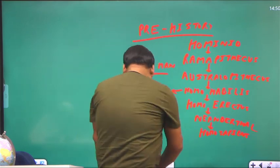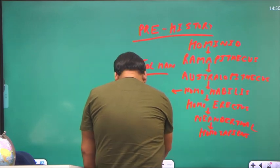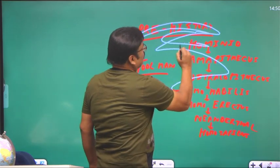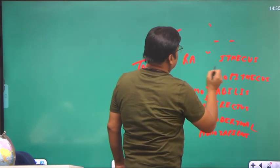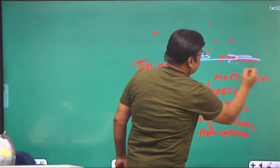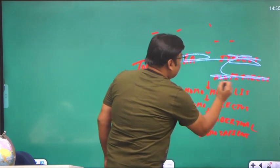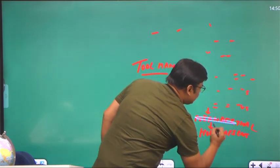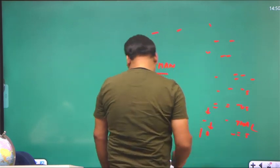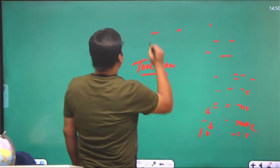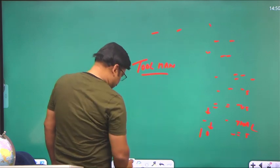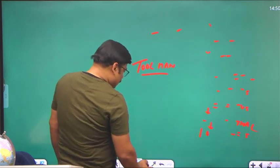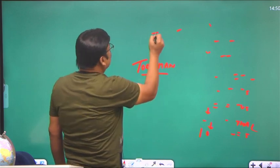After Homo erectus, there was the development of Neanderthal, and after Neanderthal, obviously we - the modern man, Homo sapiens - came. So we can see that there has been a chain of evolution that occurred before the formation of modern human beings. From Homo habilis onward, the next stage where we started making tools is where our mental development started taking place.